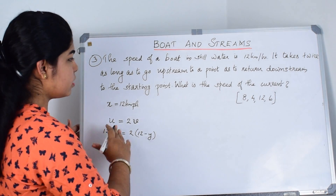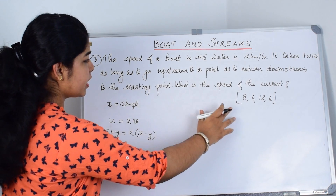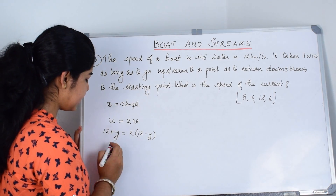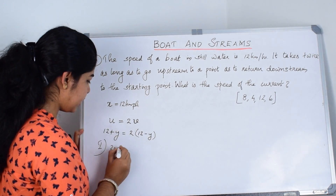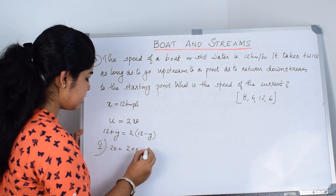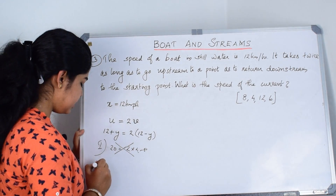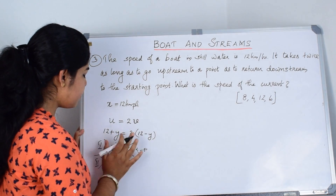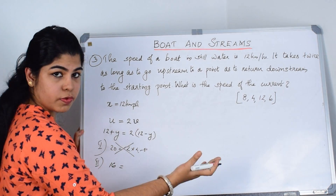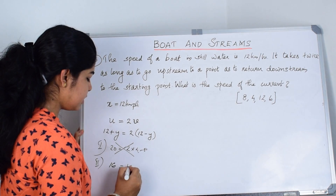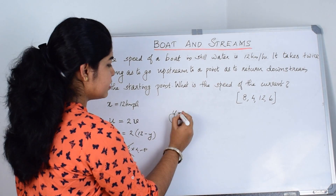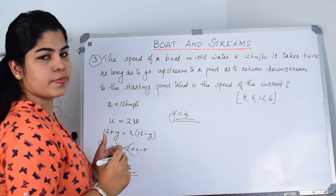We substitute values from the options. Taking Y equals 8: 12 plus 8 is 20, and 2 times (12 minus 8) is 2 times 4 equals 8. That does not satisfy. Taking Y equals 4: 12 plus 4 is 16, and 2 times (12 minus 4) is 2 times 8 equals 16. This satisfies the equation, so our answer is Y equals 4.